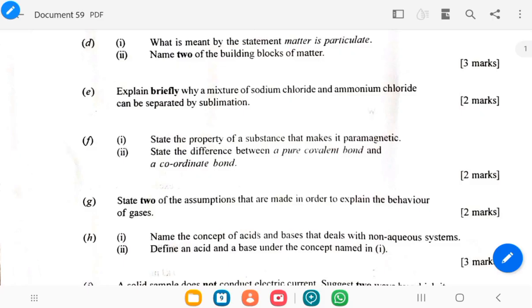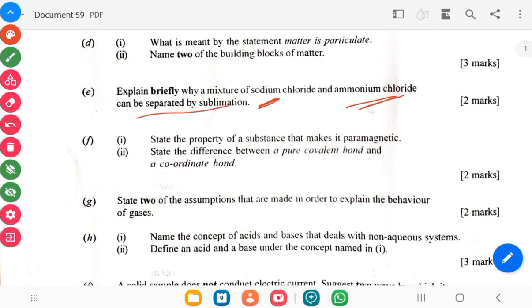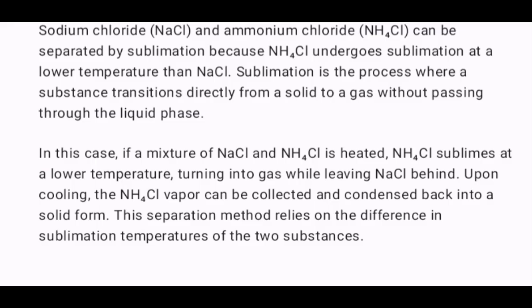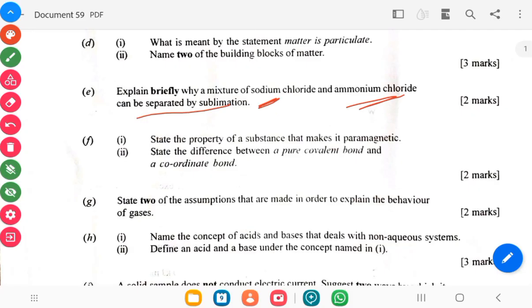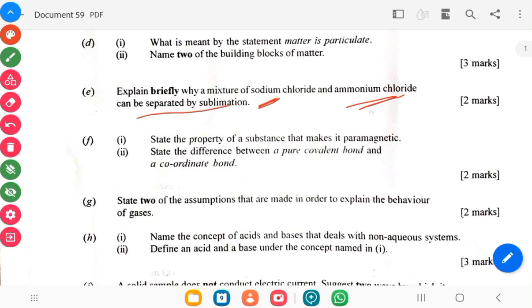The E says explain briefly why a mixture of sodium chloride and ammonium chloride can be separated by sublimation. So F, state the property of a substance that makes it paramagnetic. State the difference between a pure covalent and a coordinate covalent bond.